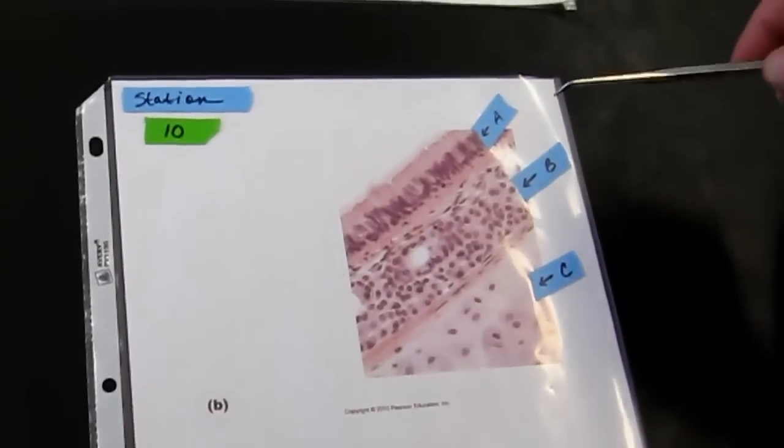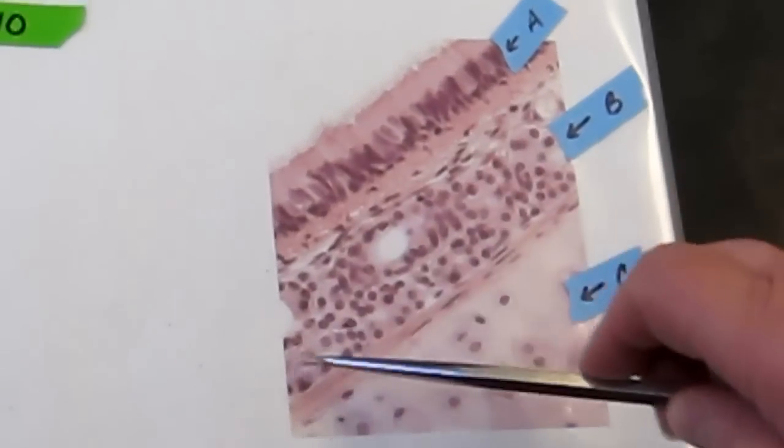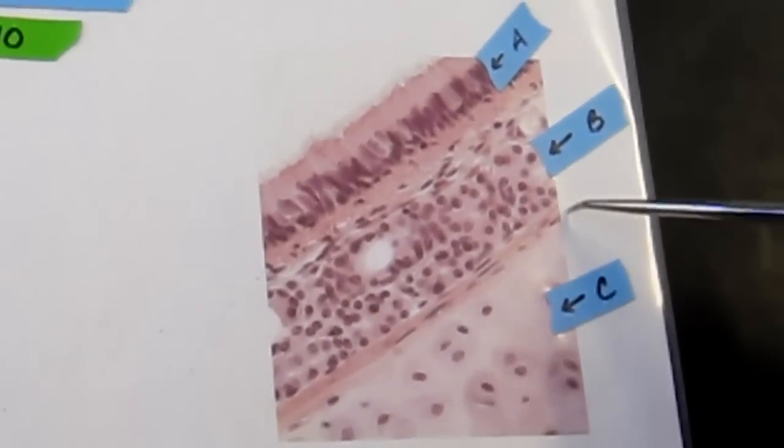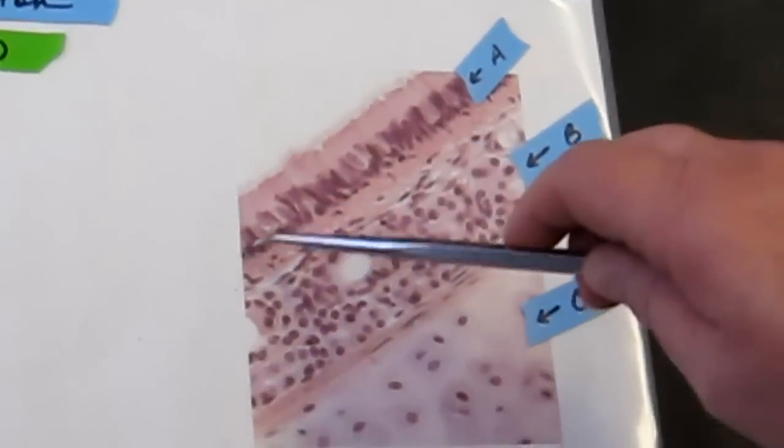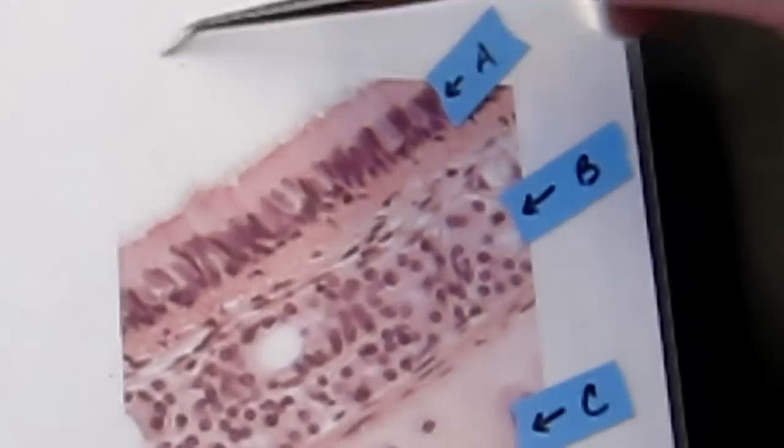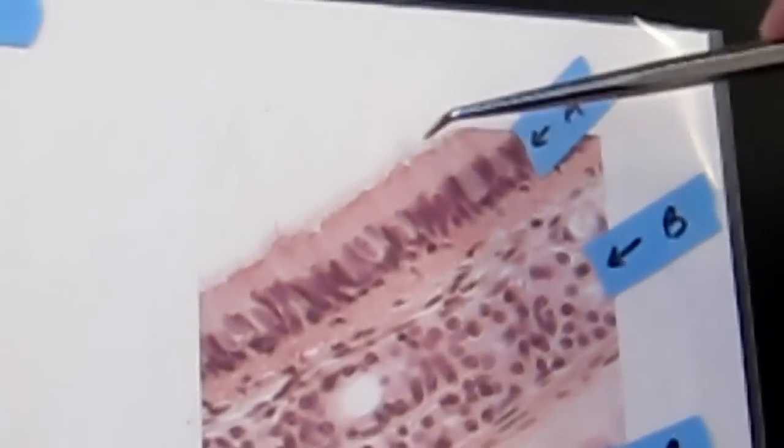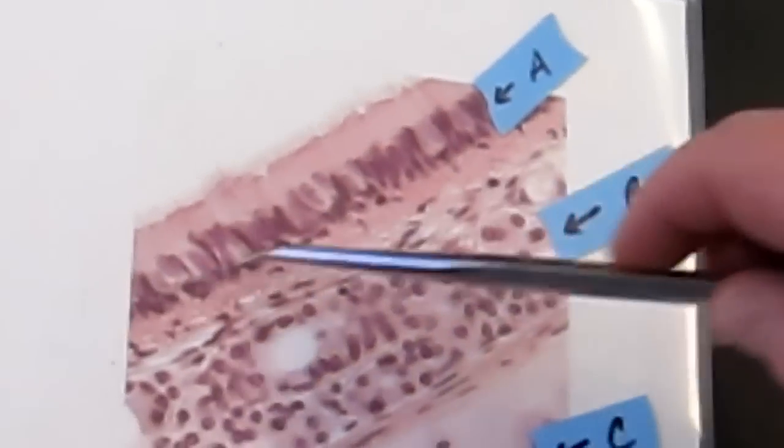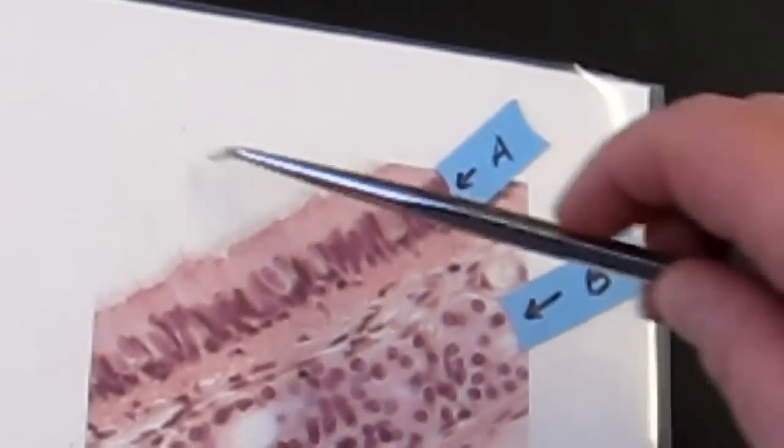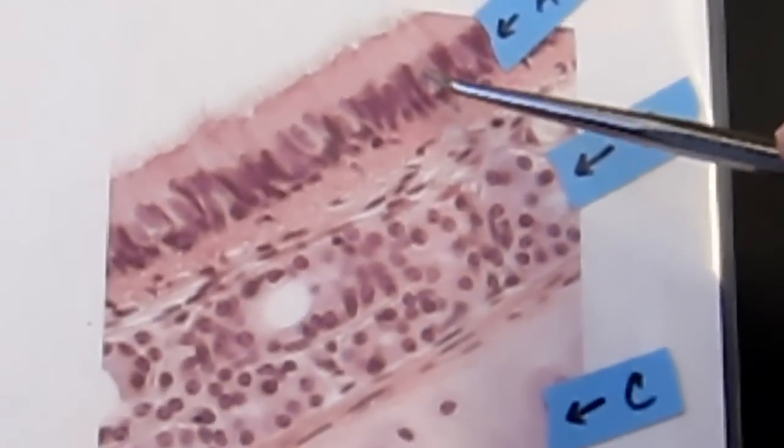Now let's switch down to this image, which is a higher power photomicrograph. Again, we have mucosa, submucosa, and adventitia, and we can see with a little more detail what the tissue of the mucosa looks like. The layer that's closest to the lumen, which would be here, is a pseudostratified columnar epithelium with cilia and goblet cells. So we can see that beautiful epithelium here. You can see the cilia facing the lumen. You can see the goblet cells here, and the goblet cells produce mucus.